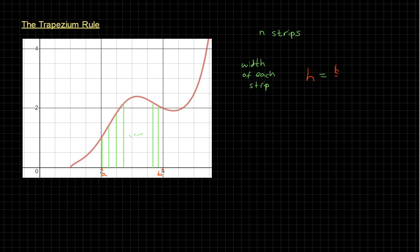The next step is to think about how to find the area of each trapezium. I'm going to label them: area A0, area A1, area A2, and so on. If I've got n strips, then the final strip is going to be A(n−1). I could have labelled them A1, A2, A3 all the way up to An — that doesn't particularly matter because we're not going to directly use the capital A's in our final expression. They're temporary labelling to help us get our rule.